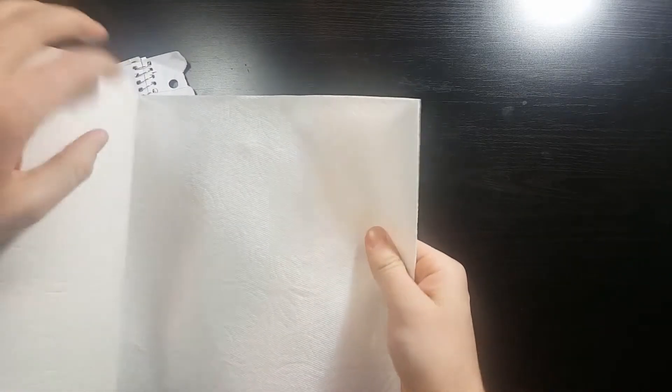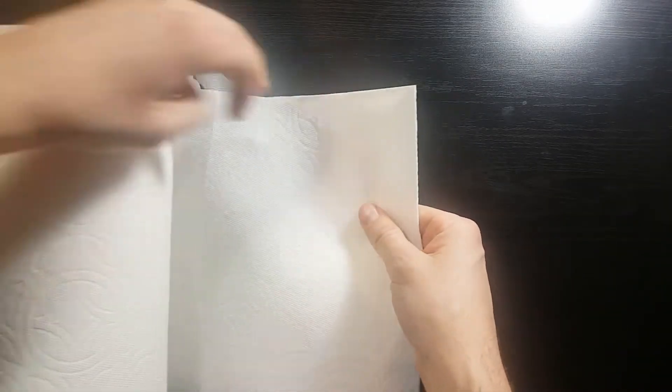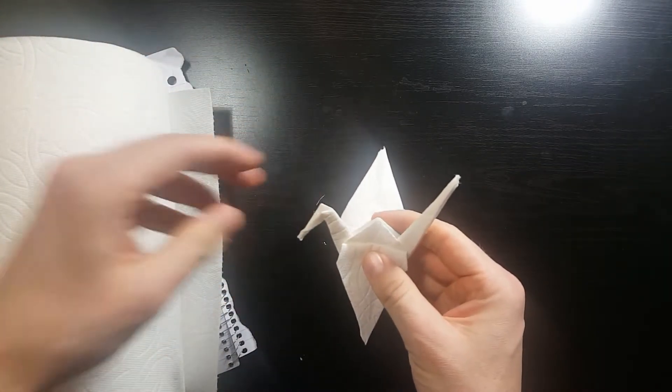This is the perfect opportunity for me to show you this new invention that I've been working on. This looks like a regular old roll of paper towels, but if you tear off one sheet, it releases the tension and you're left with the instant origami crane.